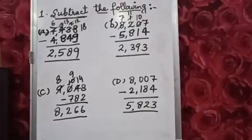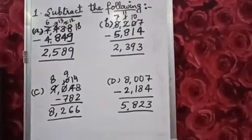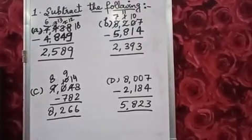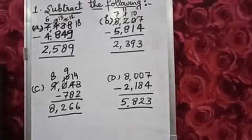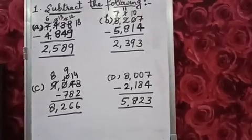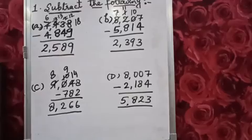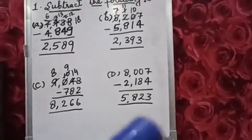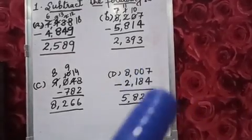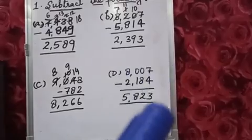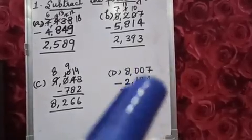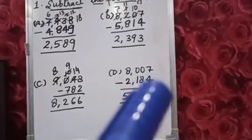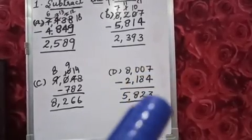Now let's see question D. Question D is 8,007 minus 2,184. Here we can simply minus 4 from 7. We will get 3.